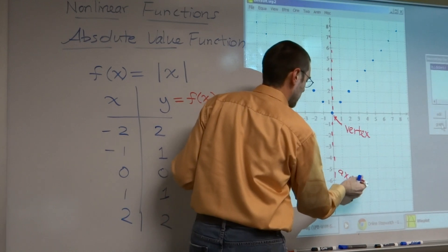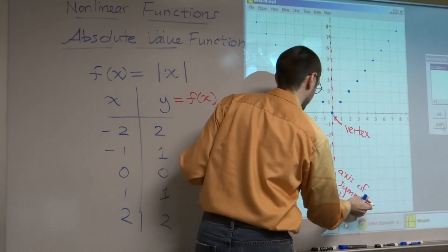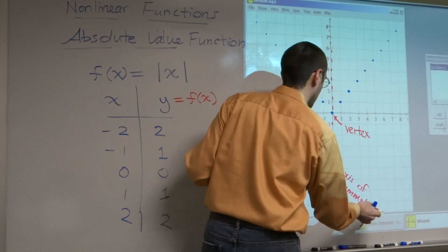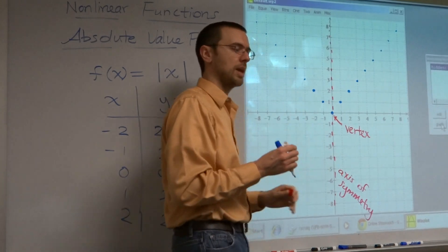This is called the axis of symmetry. And when we talk about symmetry, we talk about reflection. What you have on this side is reflected on the other side. It's the axis of symmetry.